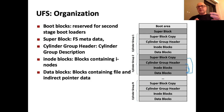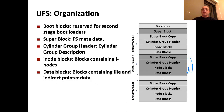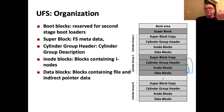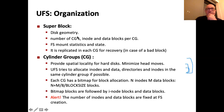The super block containing the cylinder group geometry is repeated in each cylinder group for integrity. Since it contains information about the starting sector of allocation information and data blocks, you don't want to lose it due to a bad block. If you have a bad block in the original super block, you can recover from the copies in each cylinder group. The cylinder group header holds all allocation information. UFS uses bitmap allocation—one bit per inode and one bit per data block.